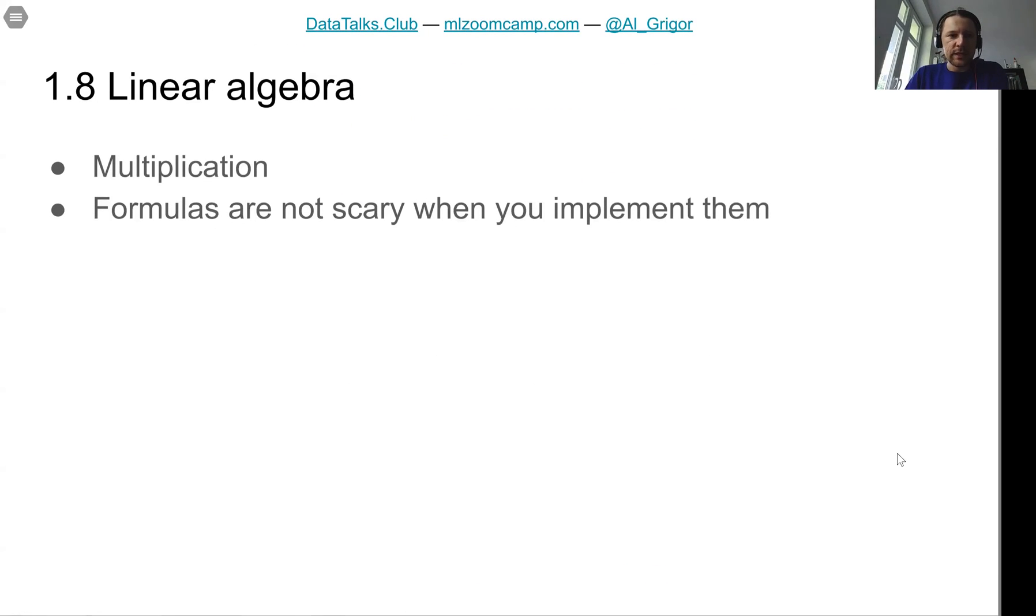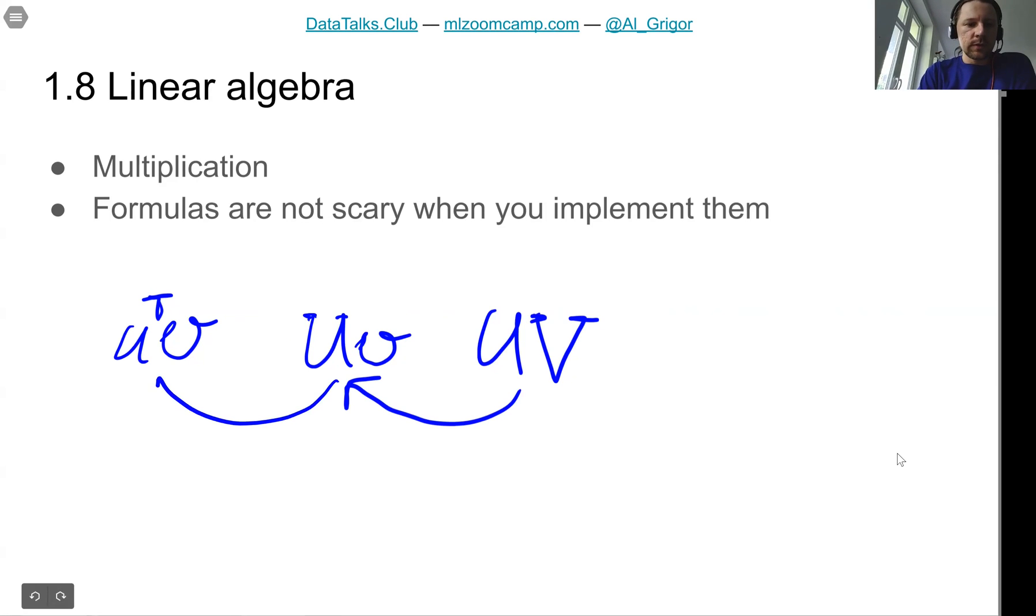In lesson eight we talked about linear algebra and multiplication. We talked about vector-vector multiplication, so if you remember we had two vectors u and v and we talked about multiplication between them. Then we talked about matrix-vector multiplication when one is a matrix denoted as capital U and the other is a vector small v, and then matrix-matrix multiplication. It's possible to express matrix-matrix multiplication as a set of matrix-vector multiplications, and matrix-vector multiplication as a bunch of vector-vector multiplications. We saw that if you implement everything in code, the formulas no longer look scary.